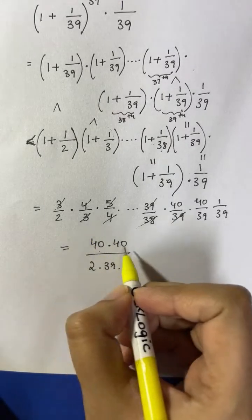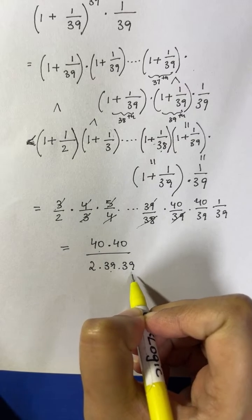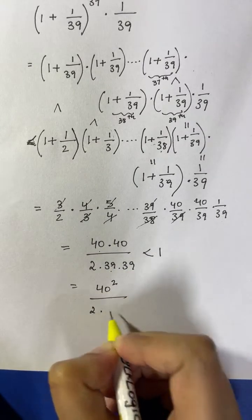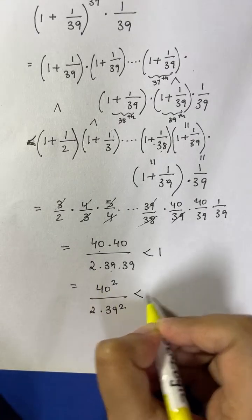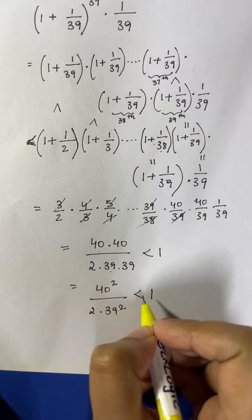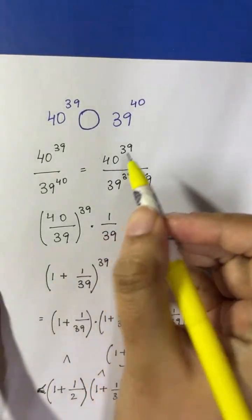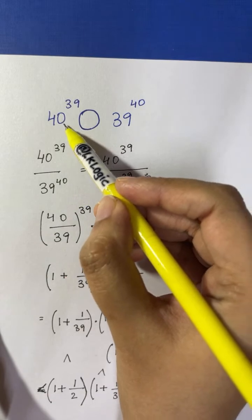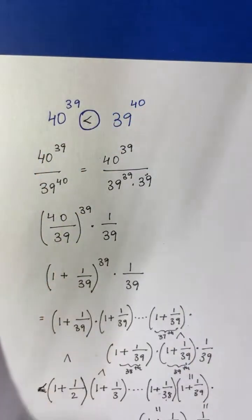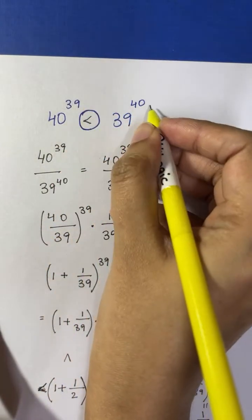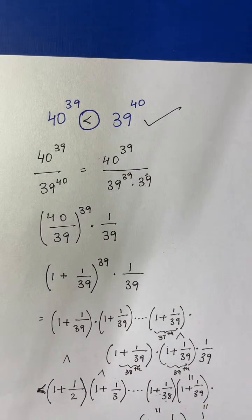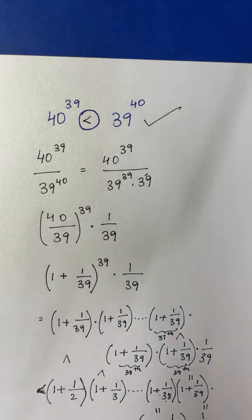Now if you see, 40 times 40 is much smaller than 2 times 39 times 39, so this whole term is lesser than 1. When that fraction is lesser than 1, as we already established, 40^39 is lesser than 39^40. So most probably — and that is your answer — 40^39 is less than 39^40. If this was helpful, don't forget to subscribe. Thank you so much for joining. If you have any suggestions, you can write in the comment box. Thank you so much, take care, bye-bye, have fun.